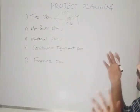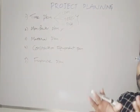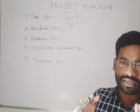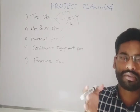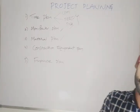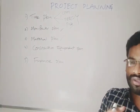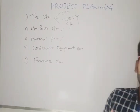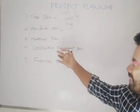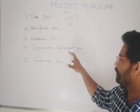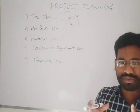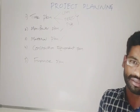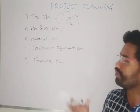Coming to the construction equipment plan — while you are constructing any project or building, you have to use different types of equipment like cranes, bulldozers, tractors, and concrete mixers. If it is a large project, you may need to purchase them; if it is a minor project, you can take them on a rental basis. That is about construction equipment planning.